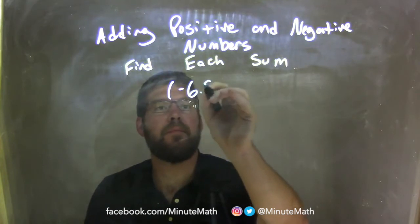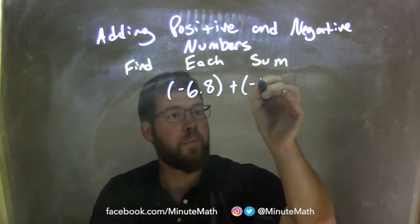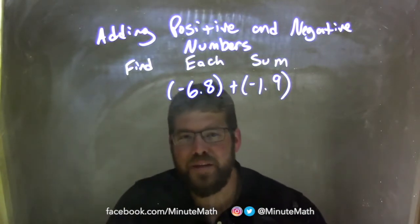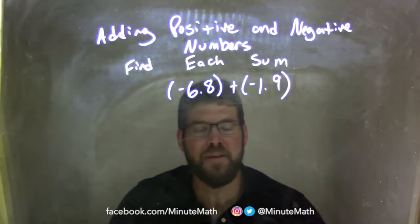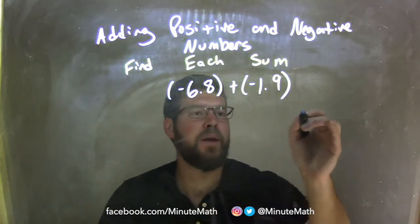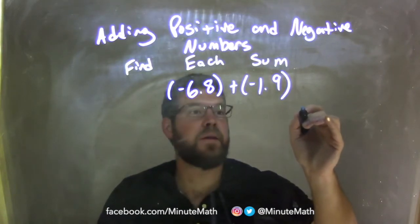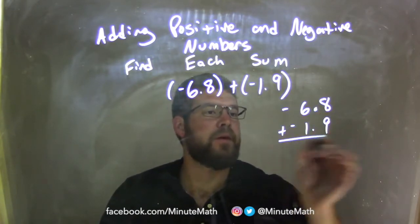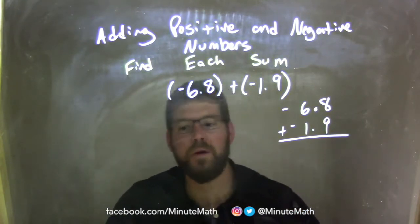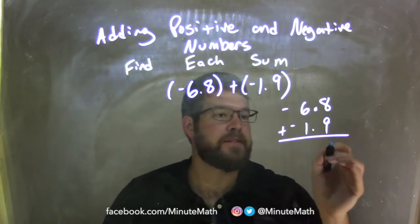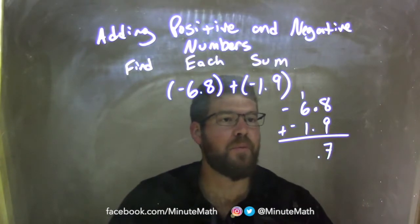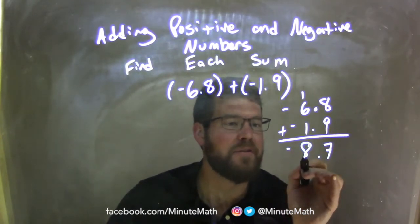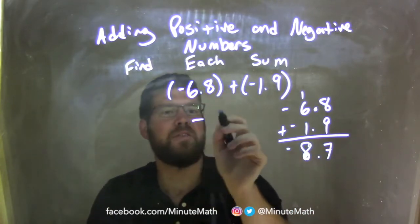Negative 6.8 plus a negative 1.9. They're both negative, so we can treat them almost as positive numbers and know the answer will be negative. 8 plus 9 is 17, carry the 1. 6 plus 1 is 7, plus 1 carried is 8. Since two negatives added together are still negative, my final answer is negative 8.7.